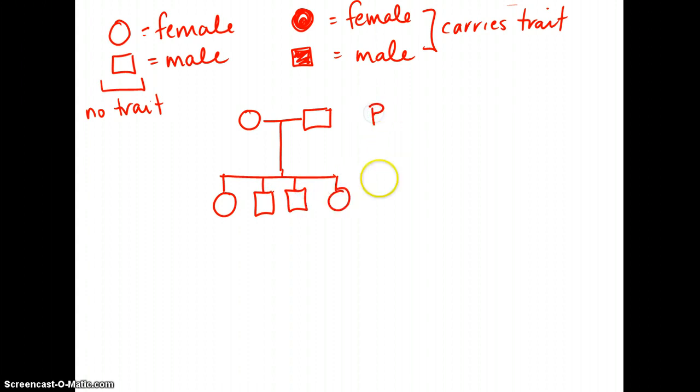Okay, so this is my P generation. This is my F1. So in this case here in our F1 generation, we have two girls. This one girl here has a colored in circle, which represents that she carries the trait. Two boys that don't carry the trait,